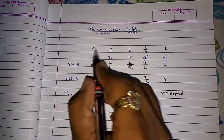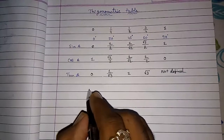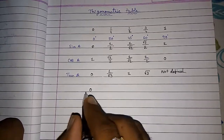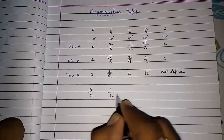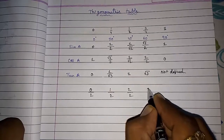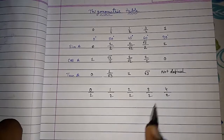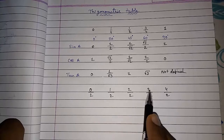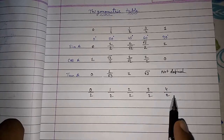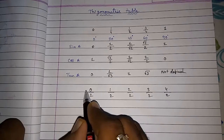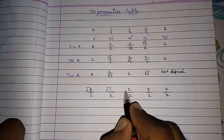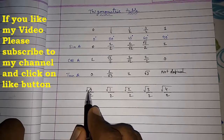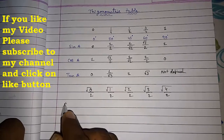Now here is a second trick if you find the first one difficult. Write 0, 1, 2, 3, 4 and then divide every number by 2: giving 0/2, 1/2, 2/2, 3/2, 4/2. Now just put a square root in the numerator of each fraction.